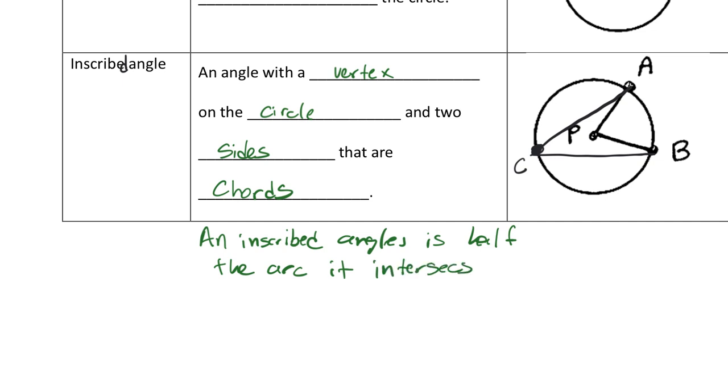So that means from this information that the measure of angle ACB, so this angle in here, is one half of the arc AB. By the way, the symbol for arc is this symbol right there.